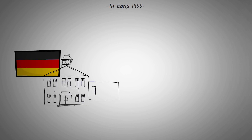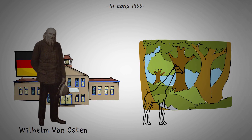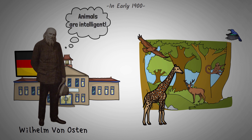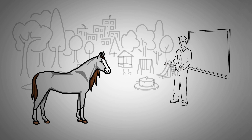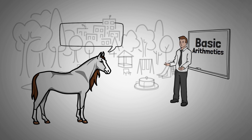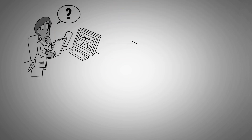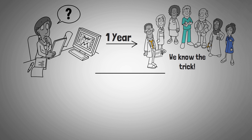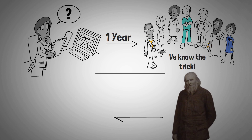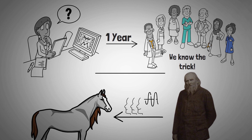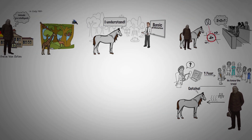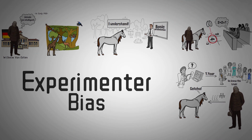In the early 1900s, a German high school teacher named Wilhelm von Osten thought that the intelligence of animals was underrated. To prove his point, he decided to teach his horse, Hans, some basic arithmetics. Clever Hans, as the horse came to be known, was learning quickly. Soon he could add, subtract, multiply, and divide, and would give correct answers by tapping with his hoof. It took scientists more than one year to prove that the horse wasn't doing the calculations himself. It turned out that Clever Hans was simply picking up subtle cues from his owner's facial expressions and gestures. Influencing the outcome of an experiment in this way is called experimenter bias, or observer expectancy bias.